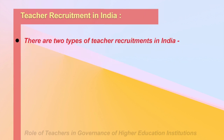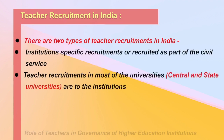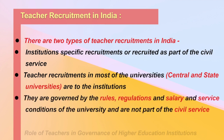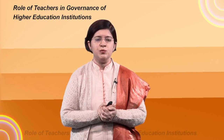In India, there are two types of teacher recruitment: institution-specific recruitment or recruitment as part of the civil service. In most central and state universities, recruitment is institution-specific, while in colleges recruitment is to the civil service. University-recruited staff are governed by the rules, regulations, salary, and service conditions of the university. In this case, the university notifies positions, constitutes the selection committee, and invites candidates for interviews. The typical selection process in nearly all central and state universities takes a long time.